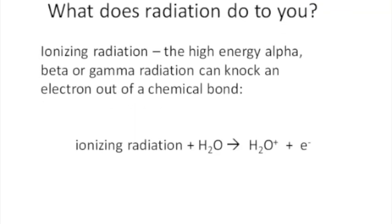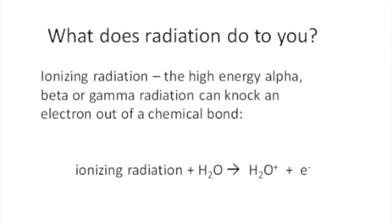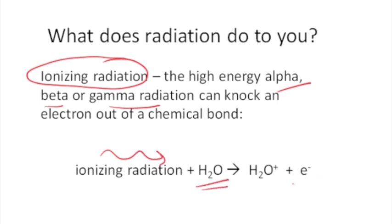Now, what does radiation do to you? Why is it something that we need to avoid? Well, nuclear radiation is what we call ionizing radiation, so the high-energy alpha, beta, and gamma radiation can create ions by knocking electrons out of chemical bonds. For example, when the ionizing radiation collides with water molecule, it can cause one of the electrons on the oxygen atom to break off.